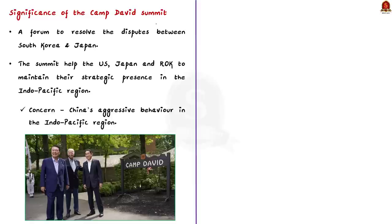First, let us start with the significance of the Camp David summit. Firstly, the Camp David summit acted as a forum to resolve the disputes between South Korea and Japan. Japan and South Korea have many unresolved historical disputes, including a territorial dispute over islands present between them and unresolved trade disputes. So the Camp David summit served as a forum to discuss these unresolved disputes between Japan and South Korea.